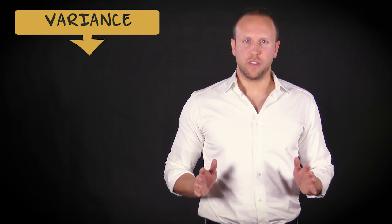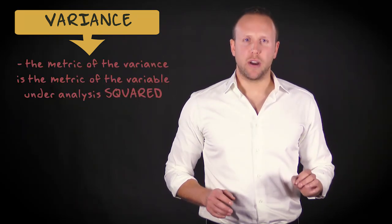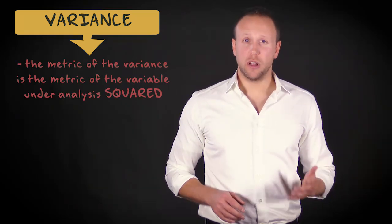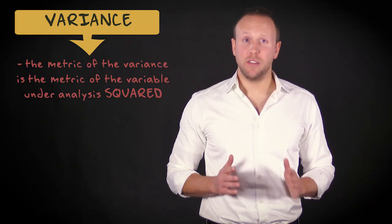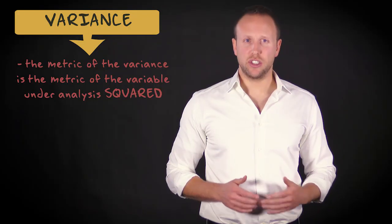An important disadvantage of the variance is that the metric of the variance is the metric of the variable under analysis, but squared. After all, we have squared the positive and negative deviations so that they don't cancel each other out.